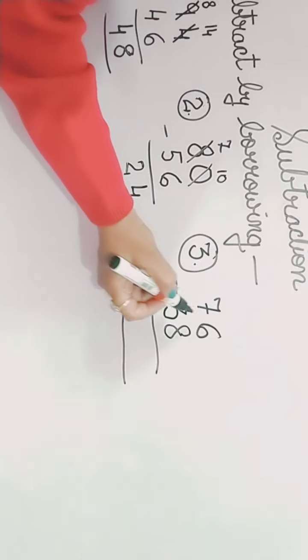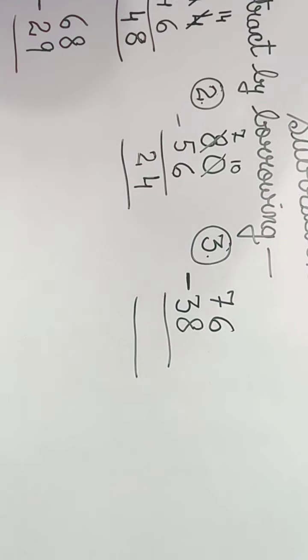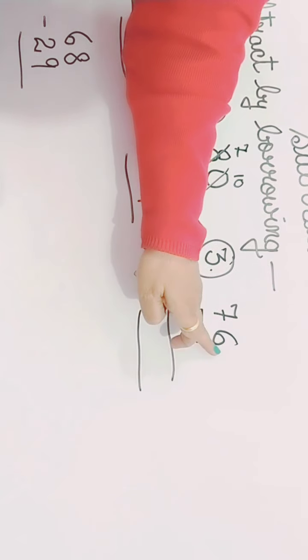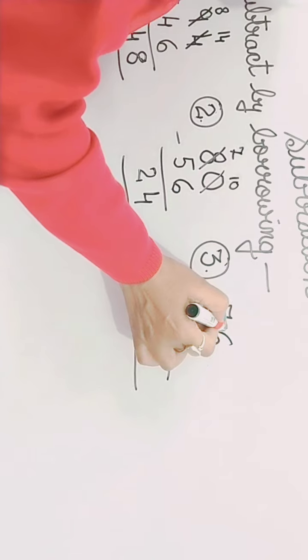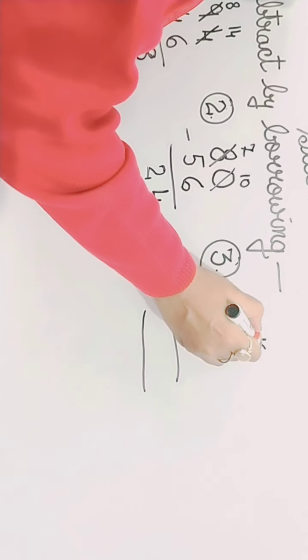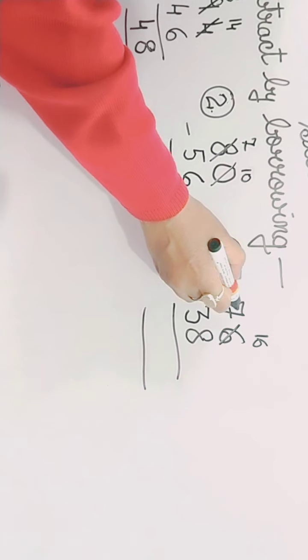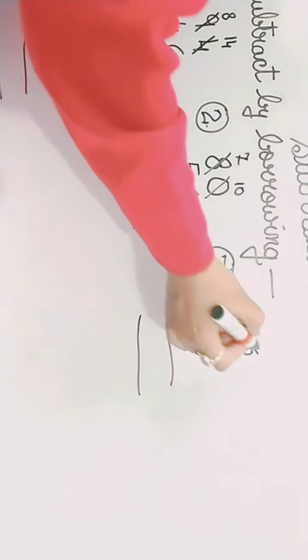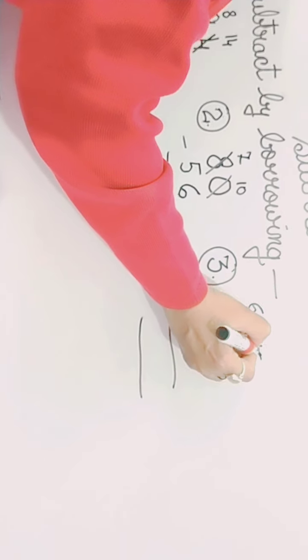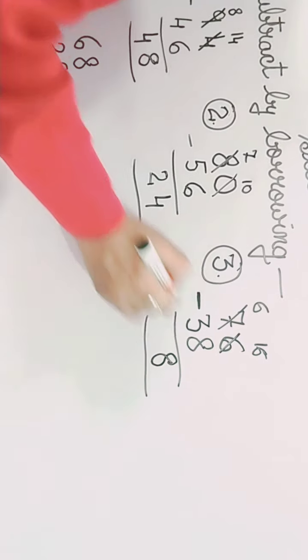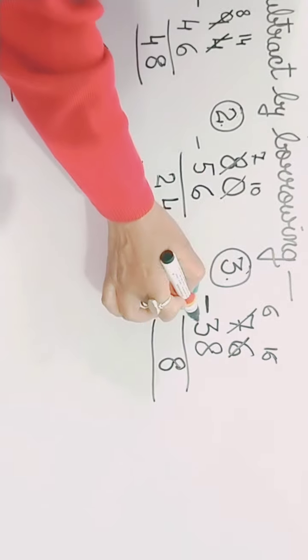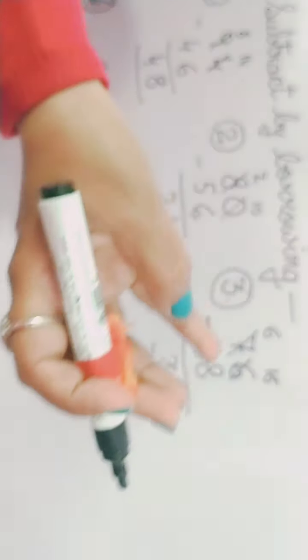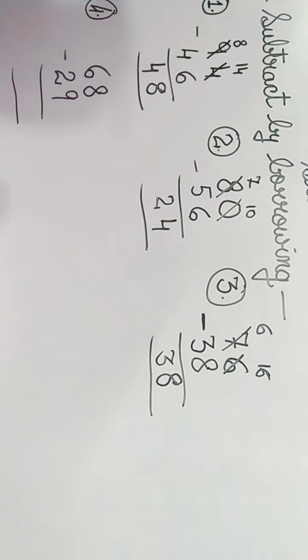Now we will do another sum. 76 minus 38. Now 6 is less than 8. 8 is bigger and 6 is smaller. So again we will borrow from 7, so it will become 16. And the 7 has given 1 number to 6, so it will become 6. Now you minus 8 from 16, so it is 8. And 6 minus 3 is 3. As I told you, you have to do it on fingers.